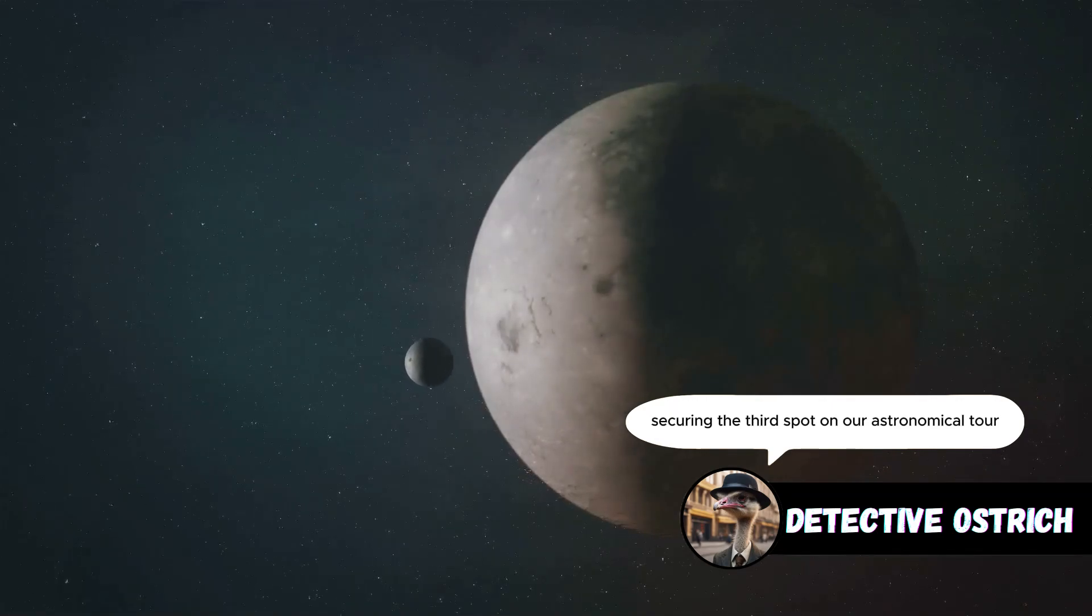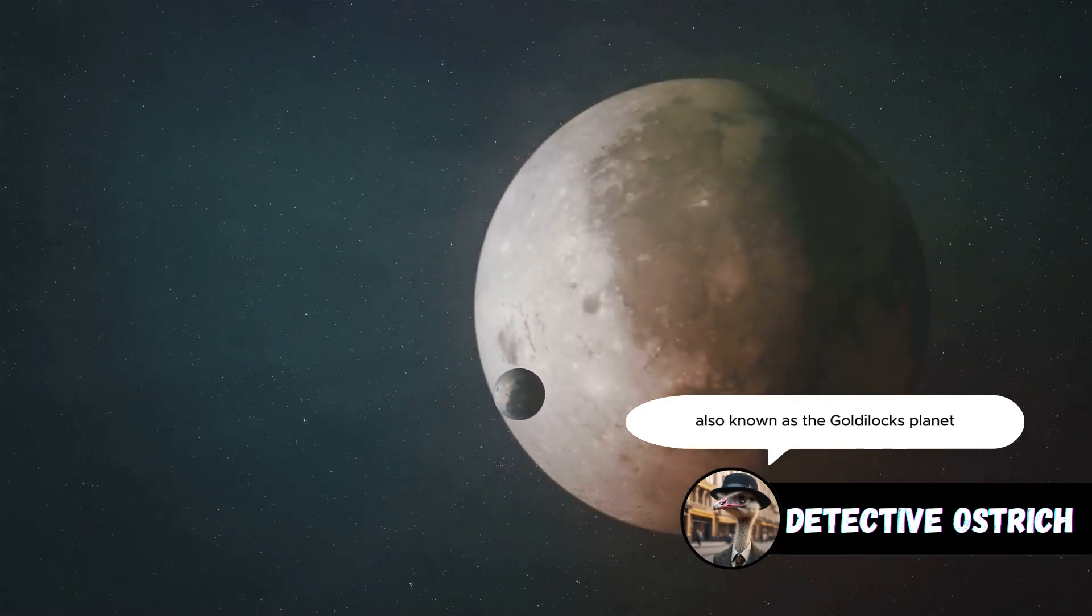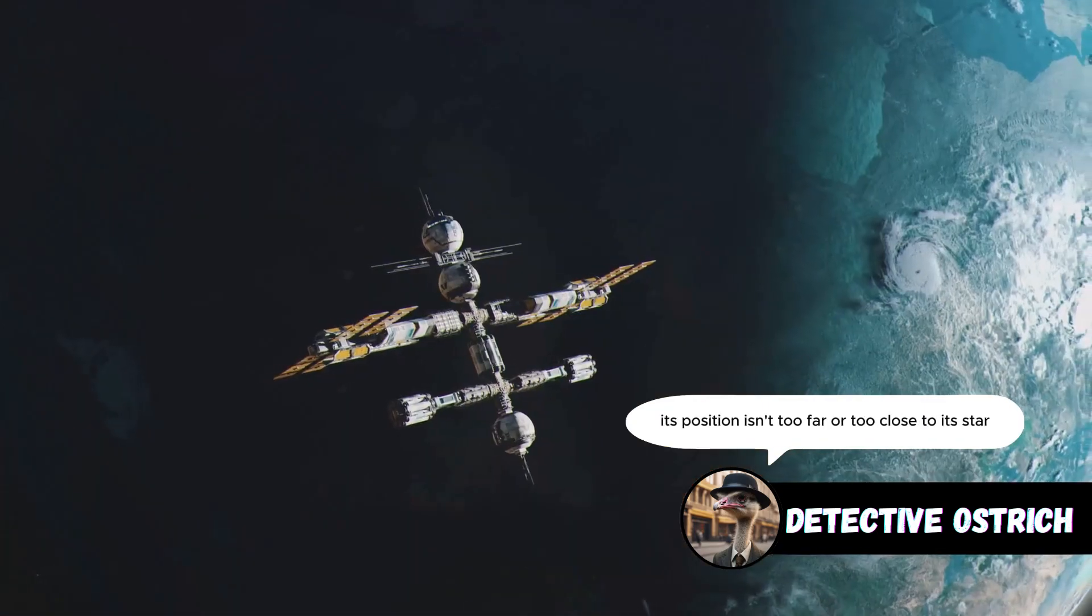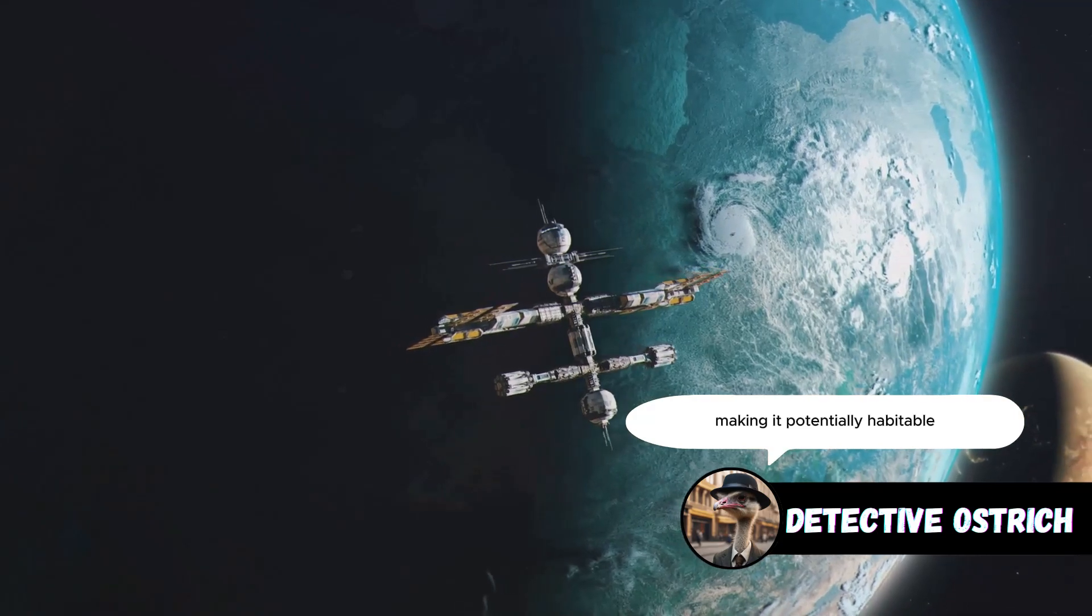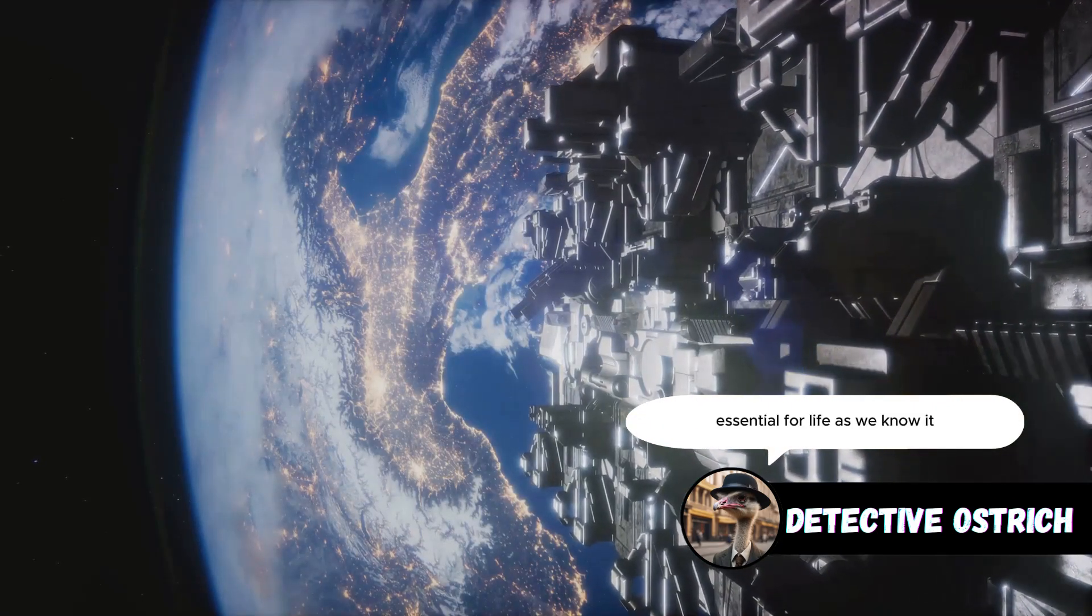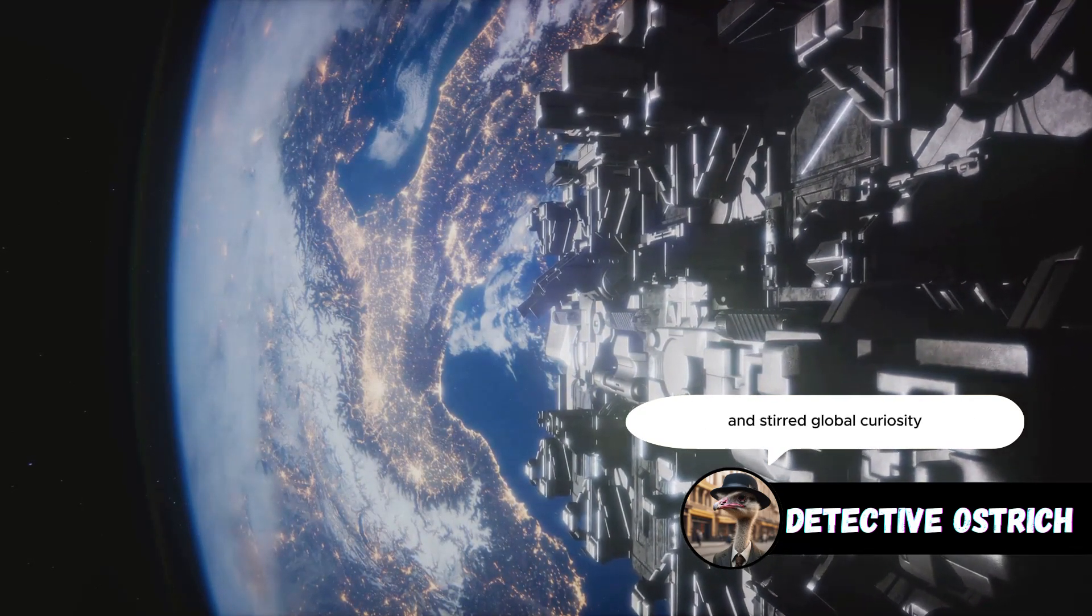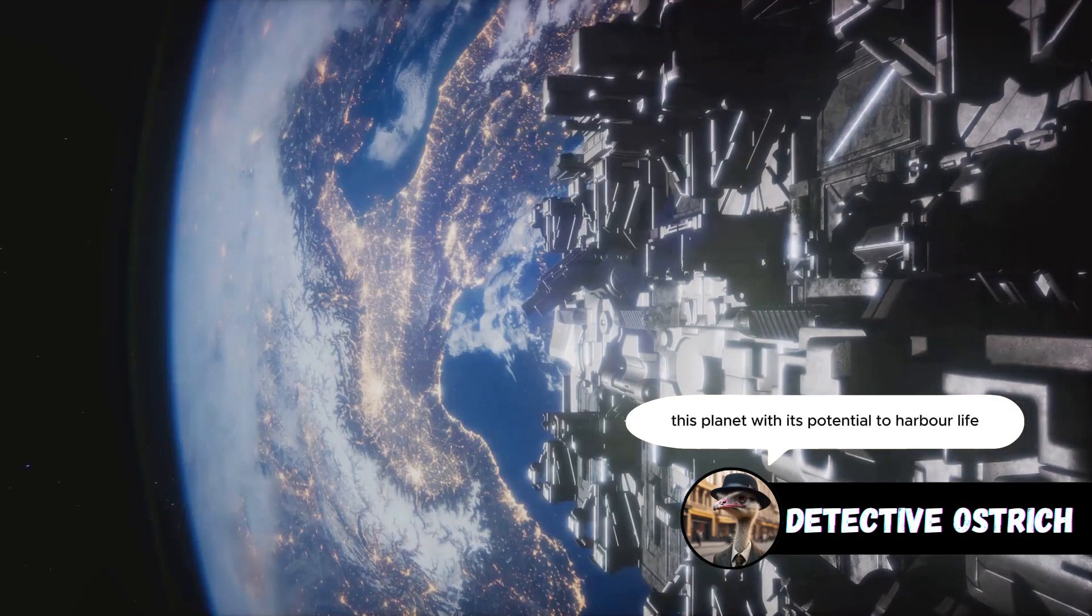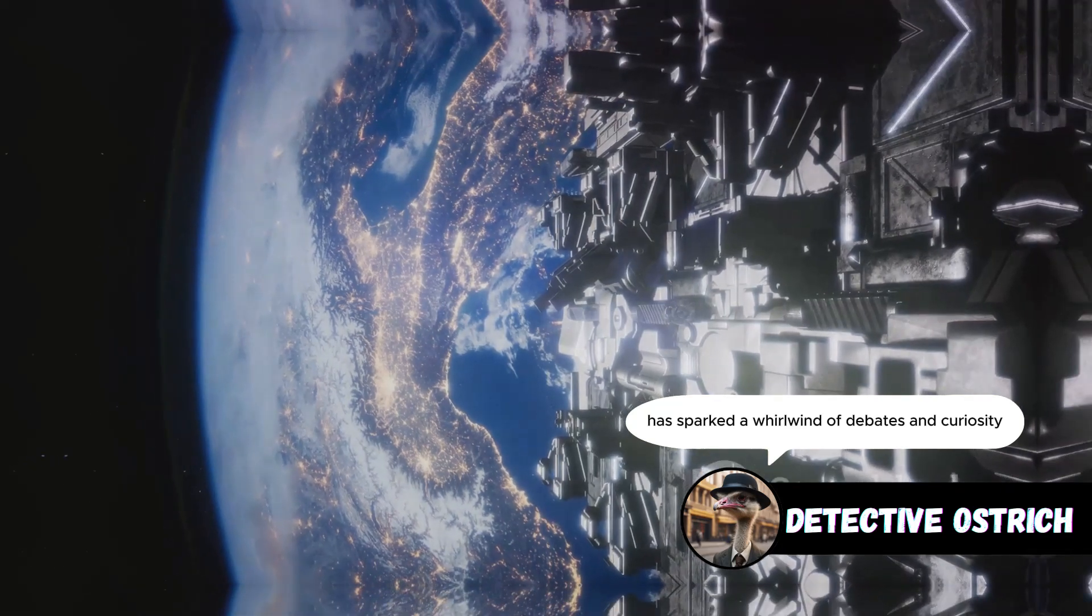Securing the third spot on our astronomical tour is Gliese 581g, also known as the Goldilocks planet. Its position isn't too far or too close to its star, making it potentially habitable. Its ideal location suggests it may support liquid water, essential for life as we know it. The prospect of life has sparked a whirlwind of debates and global curiosity.